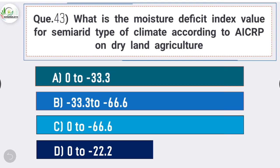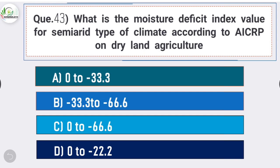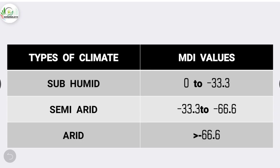Question number forty-three: what is the moisture deficit index value for semi-arid type of climate according to AICRP on dryland agriculture? Answer is option B - minus 33.3 to minus 66.6. Moisture deficit index value of sub-humid climate is 0 to minus 33.3.